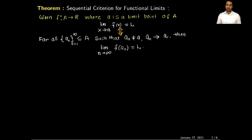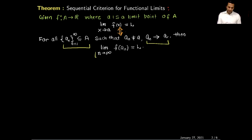Let's first read what is the statement of this theorem. The theorem says that if f is a function and a is a limit point of its domain, then the limit of the function f as x approaches a is l if and only if for all sequences that converge to the limit point a, the sequence of images under f also converges to l. This is an if-and-only-if statement.